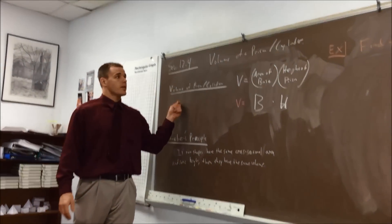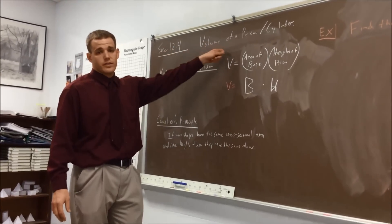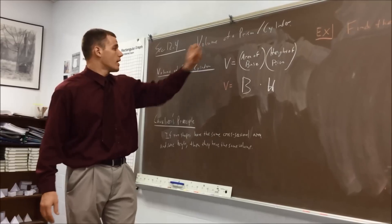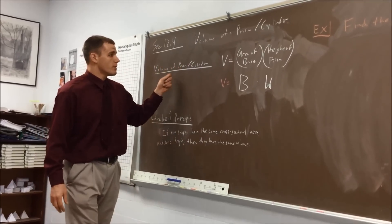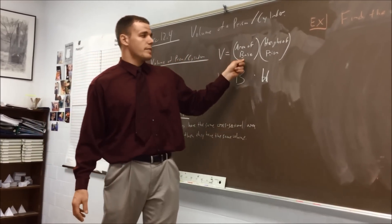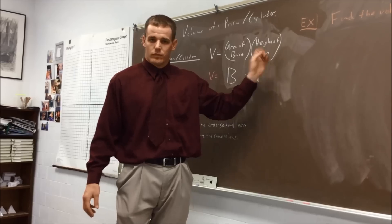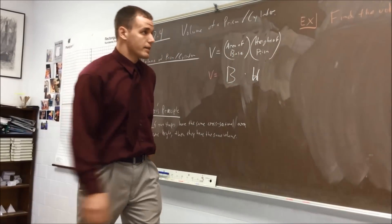We're moving on here from surface area to volume — specifically the volume of a prism. The formula is going to be the area of the base times the height of the prism. I'll show you where we get that.